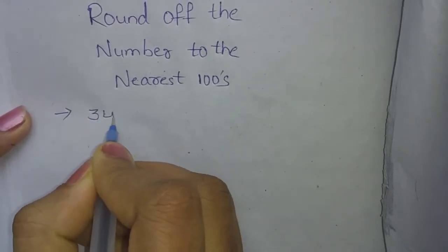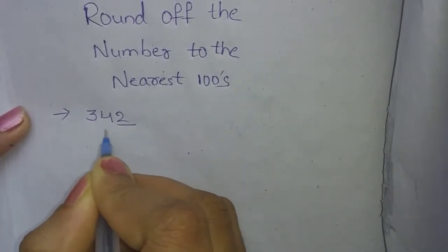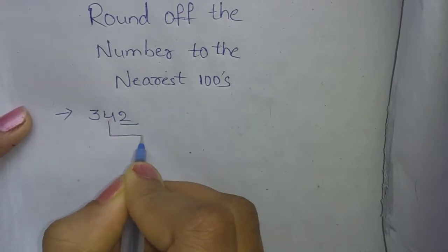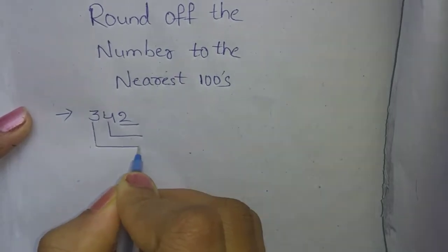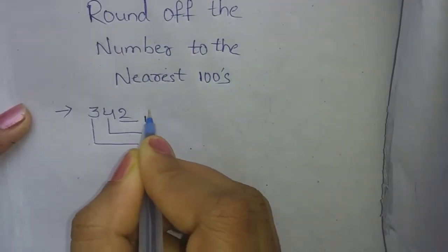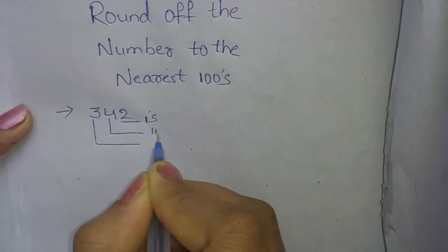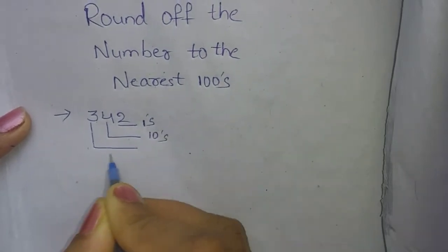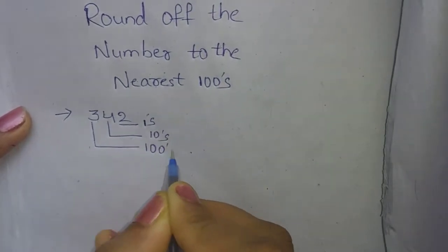For example, 340. Here we have the ones place, the tens place, and the hundreds place. The ones place is 0, the tens place is 4, and the hundreds place is 3.